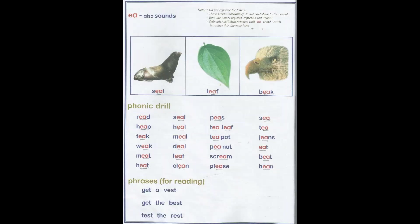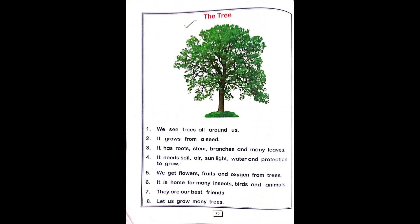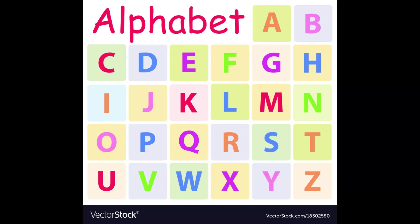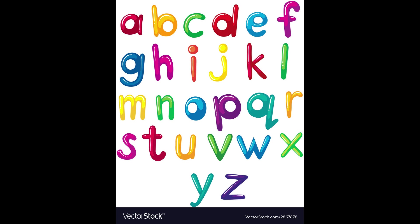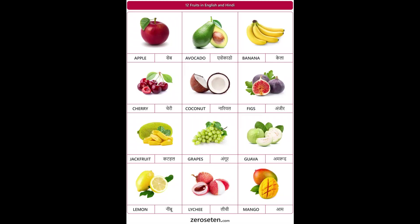Innovative methods are used for facilitating young learners. Students are also given enough exercises to reinforce the new knowledge and skills they have acquired. In class UKG, the English syllabus starts with capital and small letters, followed by vowels and consonant letters, short vowel sounds and phonetic sound words.